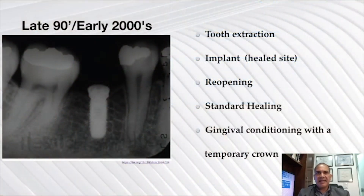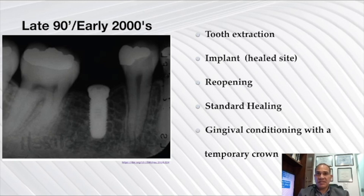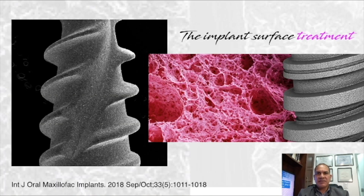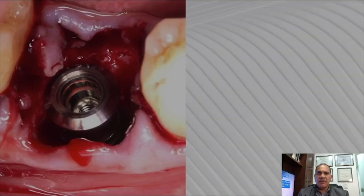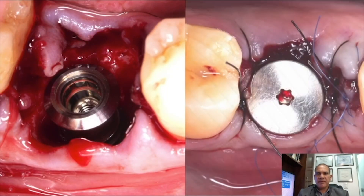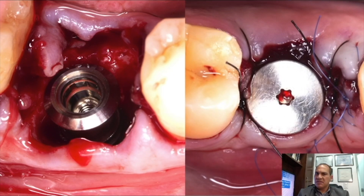In the late 90s and early 2000s, to complete the treatment with dental implants, many of us still followed the protocol established by Branemark, making two or three surgeries after the tooth extraction. But today we know the features of macro-design and micro-topography of our implants and the treatment of their surfaces. We can put an implant immediately after the tooth extraction and place a healing abutment without closing the gingiva.